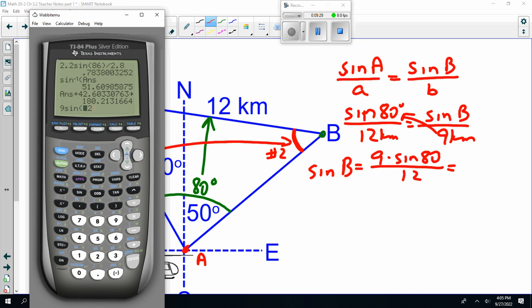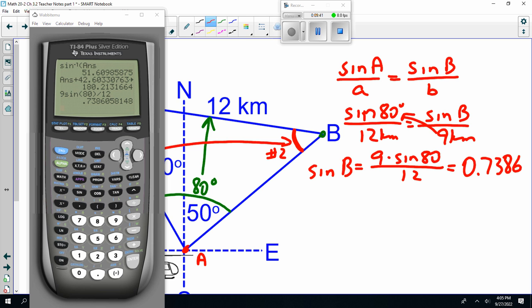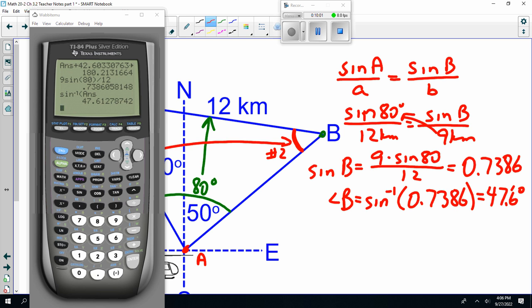I'm sorry, 9 of 80, my apologies. 0.7386. And notice we go to four decimal places. Inverse sine of my answer. 47.6. 47.6 degrees. So, this is 47.6 degrees.